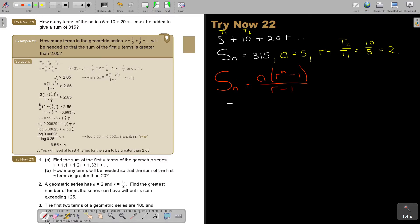So in the place of SN, I put 315. In the place of A, I put 5. In the place of R, I put 2 to the power of N minus 1. And it's going to be 2 minus 1.